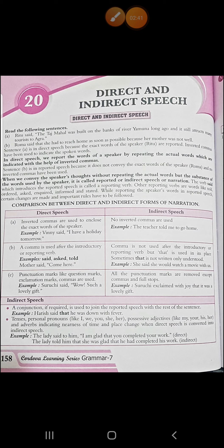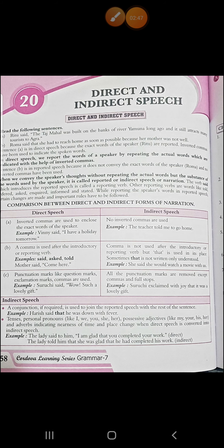In indirect speech, a comma is not used after the introductory or reporting verb, but the conjunction 'that' is used in its place. Sometimes 'that' is not written, only understood. Like: 'She said she would watch a movie with us.' So you can see here, a comma is not used.